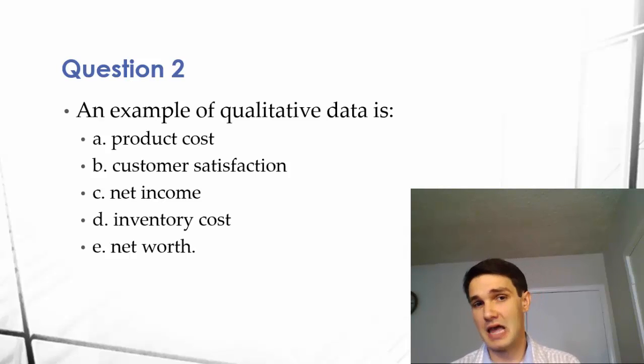For C, net income, that's quantitative and exact as well. We can say that company had a million dollars of net income.